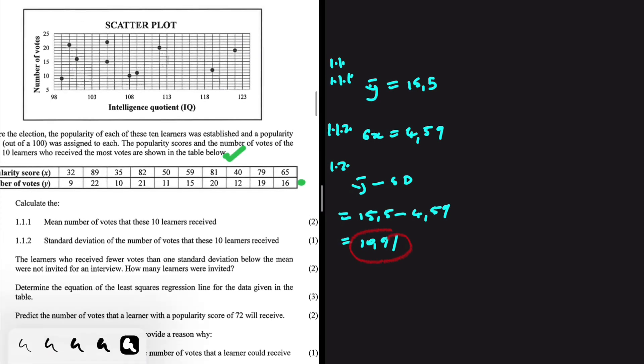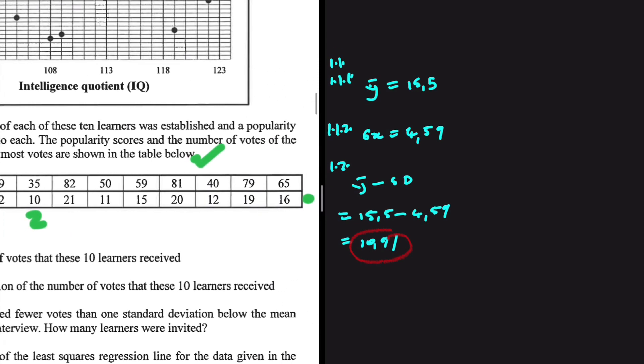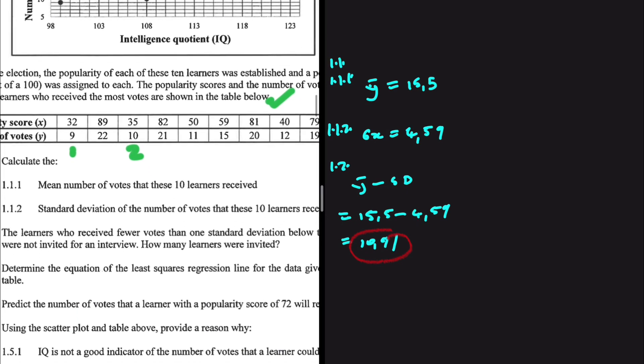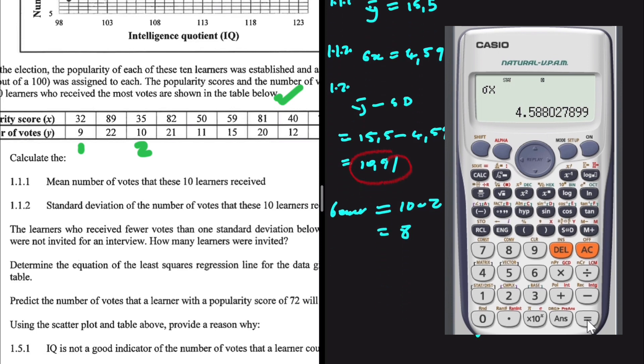So how many learners had less than 10.91 votes? Let's go ahead and find out. So we have one, the learner received nine votes. Two, what else? So two learners were not invited for the interview. So the learners that were invited, we're going to have 10 minus 2, which is equal to 8. So only eight learners were invited. Two learners had votes one standard deviation below the mean. That is 1.2.